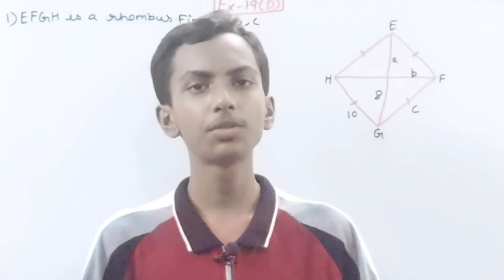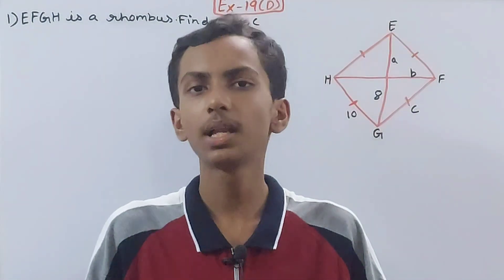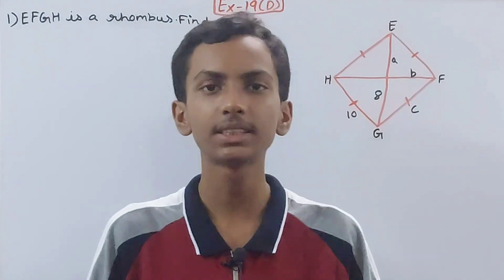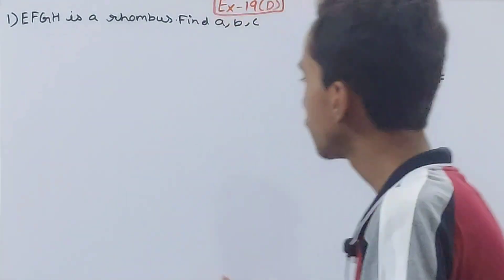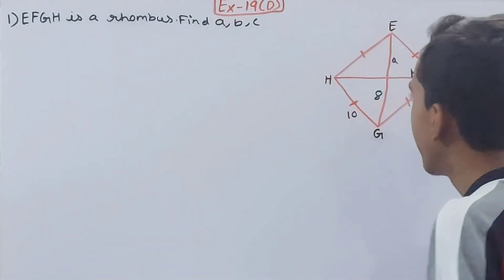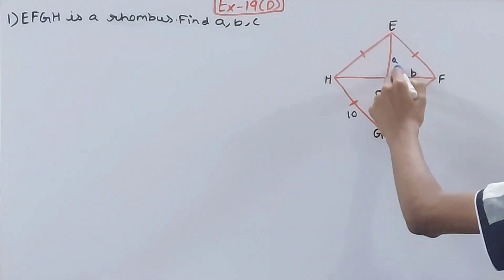Hello friends, welcome back to my YouTube channel Unlock Your Learning. In this video we are going to solve ICSE Mathematics Class 8, Chapter 19, Special Type of Quadrilaterals, Exercise 19D, Question 1. EFGH is a rhombus. Find a, b, and c.